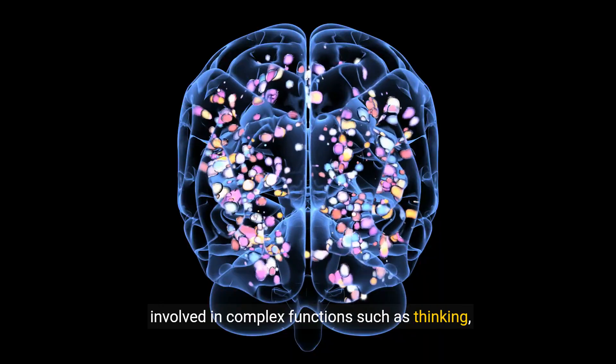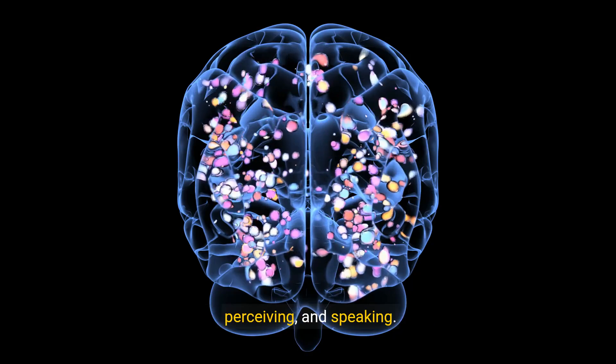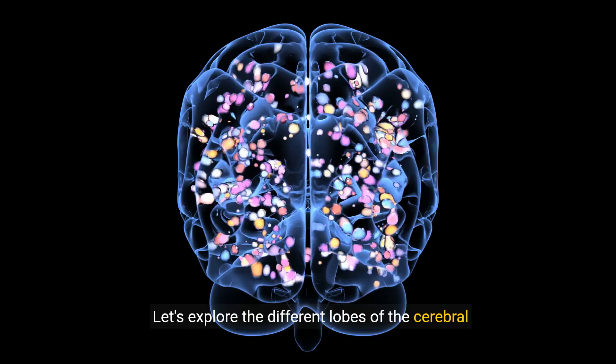The cerebral cortex is the brain's outer layer, involved in complex functions such as thinking, perceiving, and speaking. Let's explore the different lobes of the cerebral cortex.